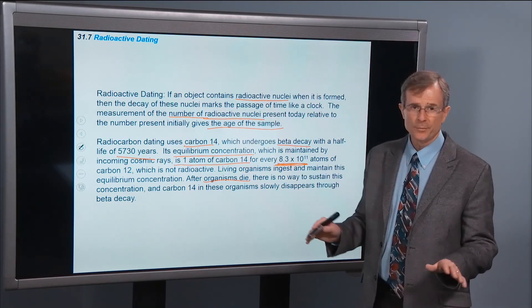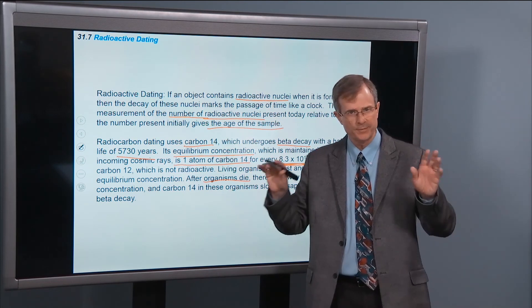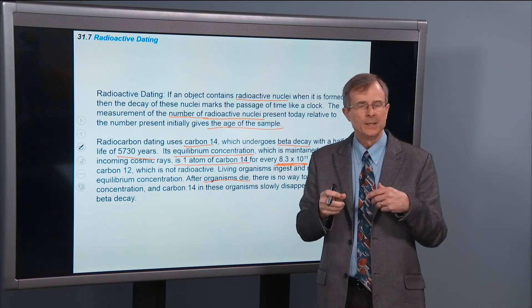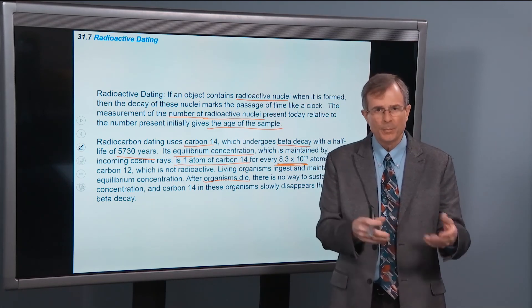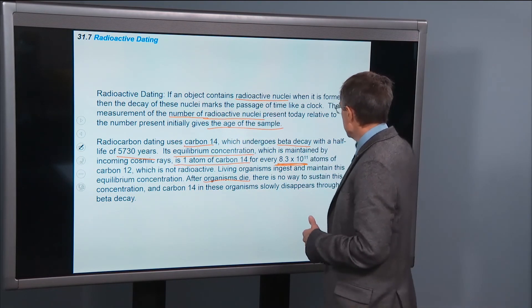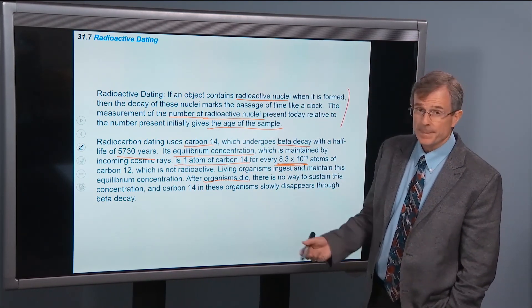So there's no way for us to sustain the equilibrium concentration. So slowly but surely, over a period of thousands of years, those carbon-14 atoms inside of our body, or inside any dead body, decay away. And then you can follow this process to get an age of the sample.